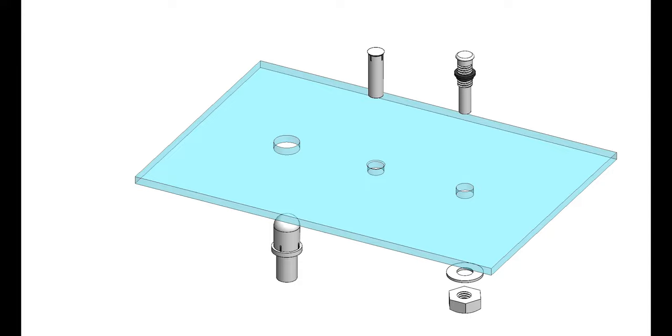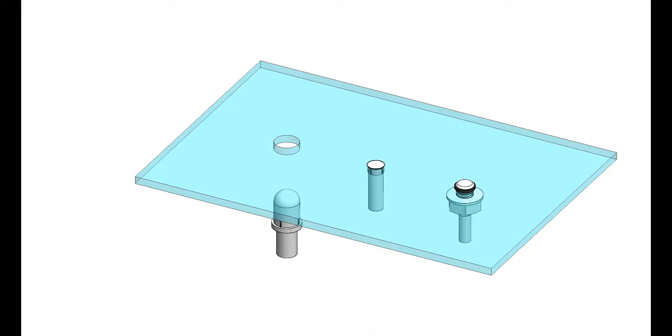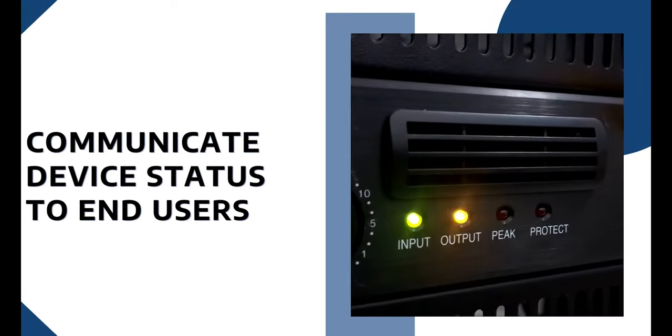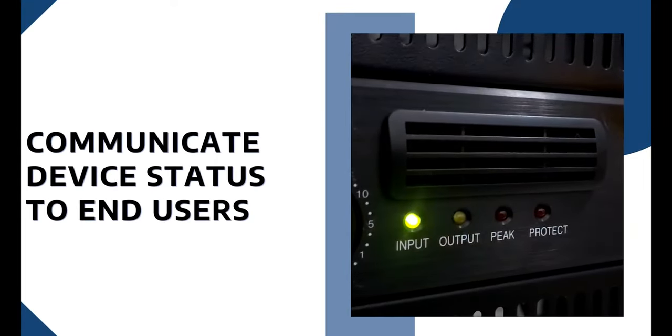Panel press fit light pipes are used to efficiently transfer light from an LED to a user interface panel. They press securely into the panel and hover as close to the SMD LED without touching the LED. The most common application for panel press fit light pipes is to communicate device status to an end user.